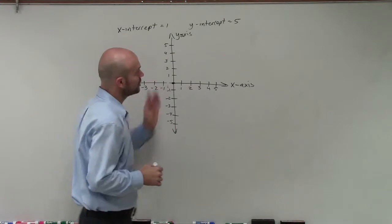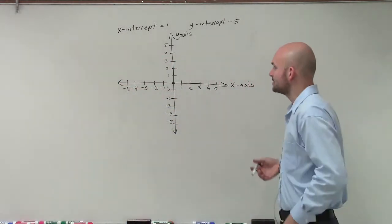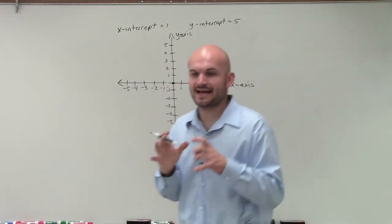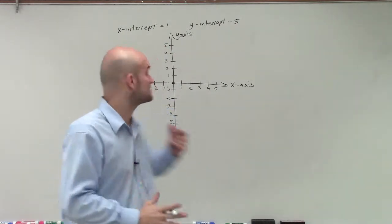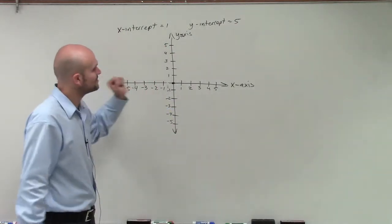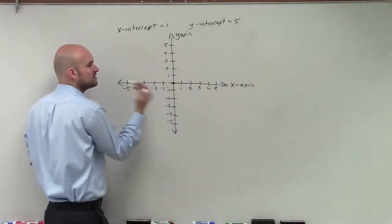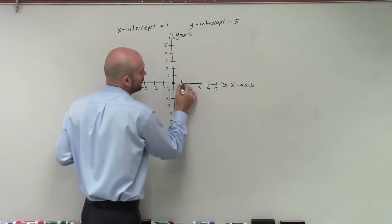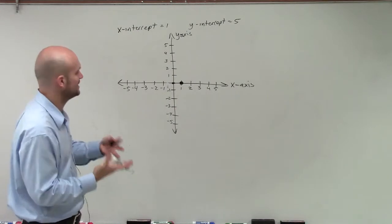OK. So I'm given two sets of information. I'm given the x-intercept and the y-intercept. So when we're talking about the x and y-intercept, that means those are the values where a point crosses each axis. So the x-intercept equals 1. Well, since it's positive, it's going to be to the right. And that means the graph is going to cross when my x value equals 1. So I'm going to make a nice big point because that's going to be a solution to our linear equation.